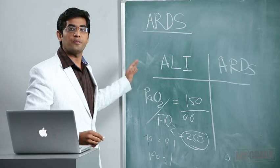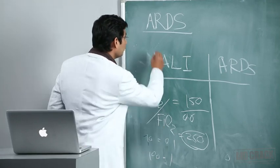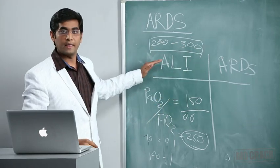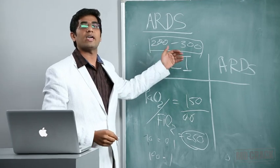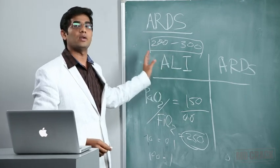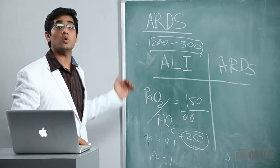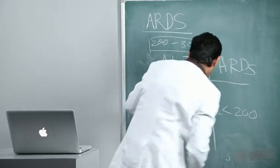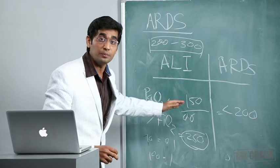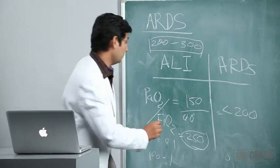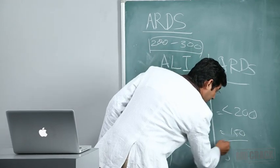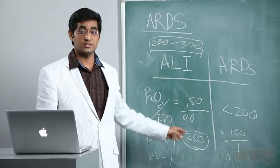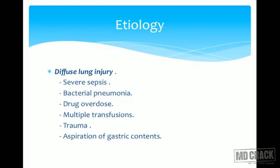When the ratio of PaO2 to FiO2 comes between 200 to 300, it is labeled as acute lung injury. It is a less severe form of ARDS and these patients are at risk of developing ARDS. When this ratio is less than 200, it defines ARDS. Example: when PaO2 is 150 with 100% oxygen, the ratio will be 150, so that patient is in ARDS.